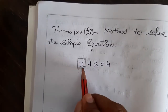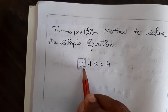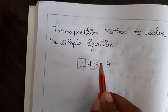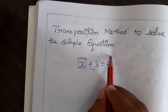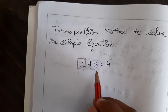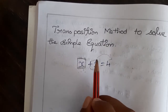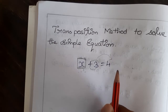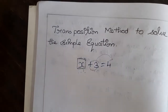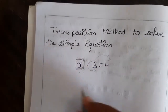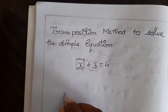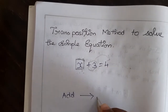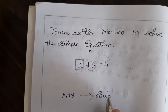Our main aim is to find the value of x. So let me transpose this 3 to the next side. It is in the LHS (left hand side). Let me transpose to the next side, that is RHS. While transposing, you have to note that if it is addition, while transposing, it will become a subtraction.